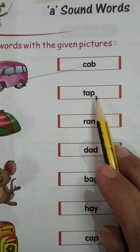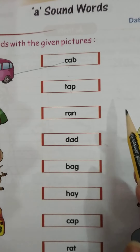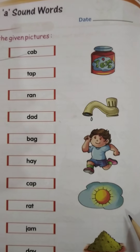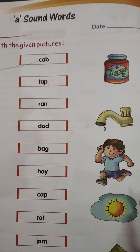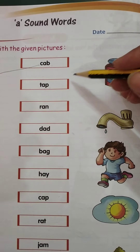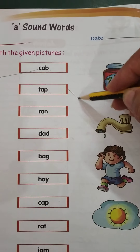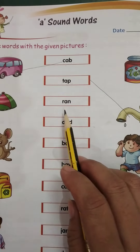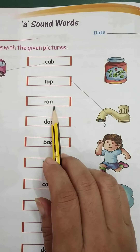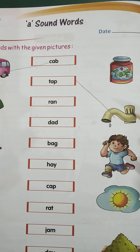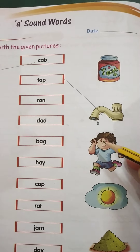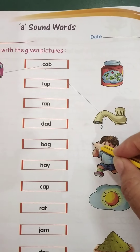Ta-a-b. Tap. Where is tap? Yes? Tap. Very good. This is a tap. Ra-a-n. Ran. Yes, ran.